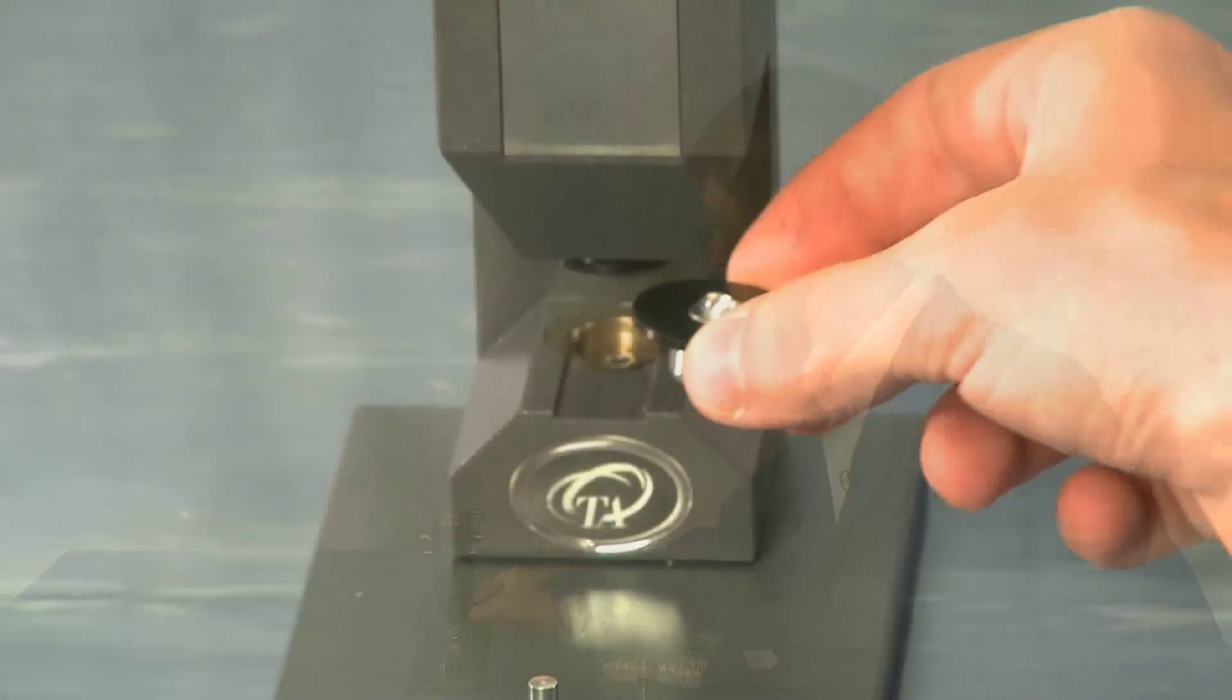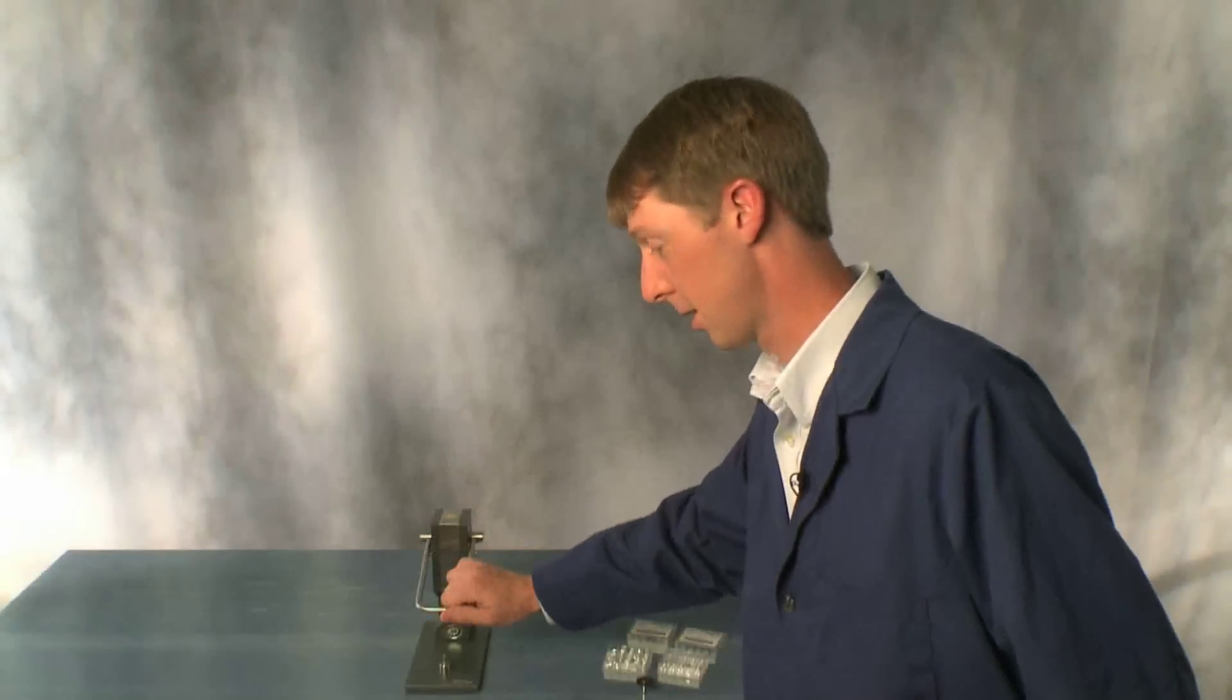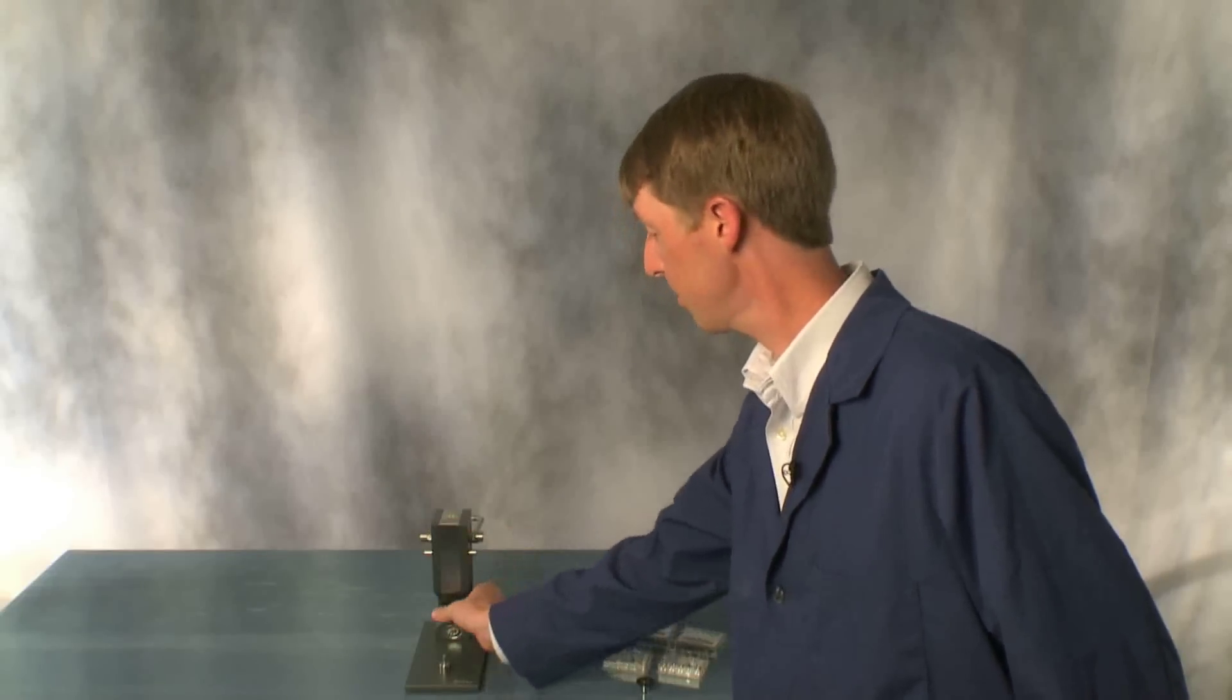Once you place that into the pan, put the lower die in the press, pull the handle down, pull the lower die out, and you're ready to run experiments.